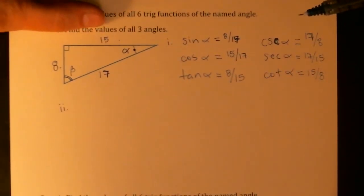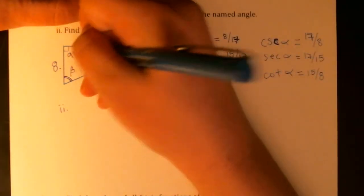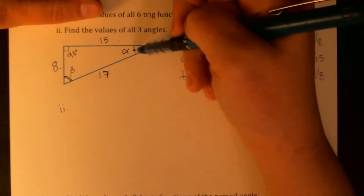So if I want to find the values of the angles, I already know that this one is 90 degrees. So that's easy. But let's work on alpha since it was labeled.